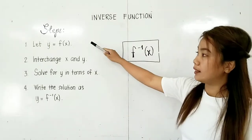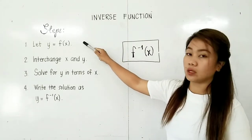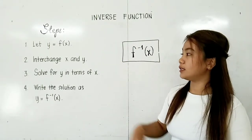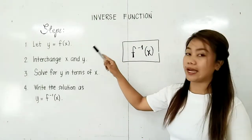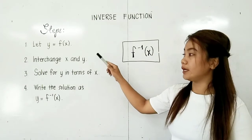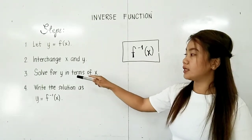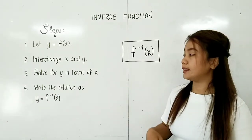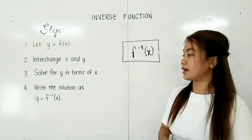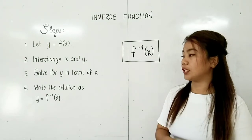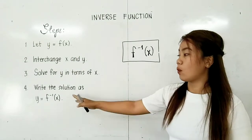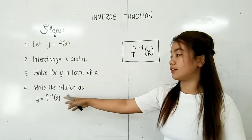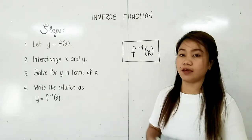First, let y equal to f of x. Second, interchange x and y. Third, solve for y in terms of x. And lastly, write the solution as y equal to the inverse function of f.